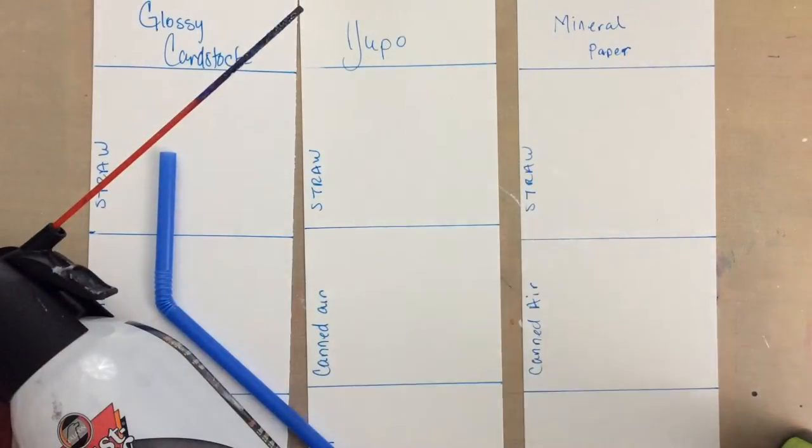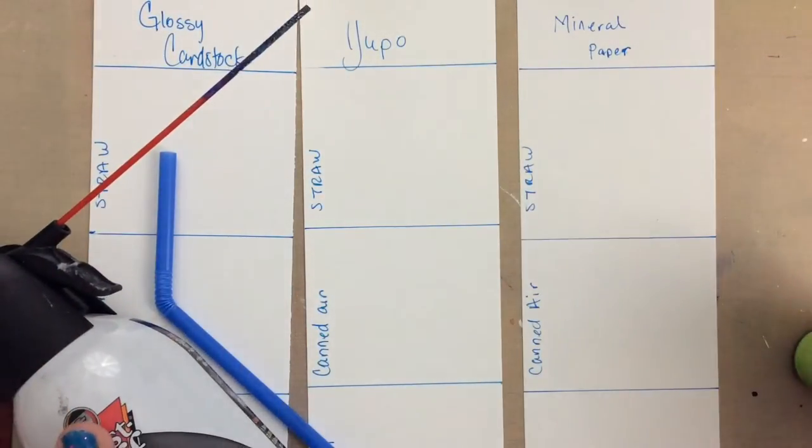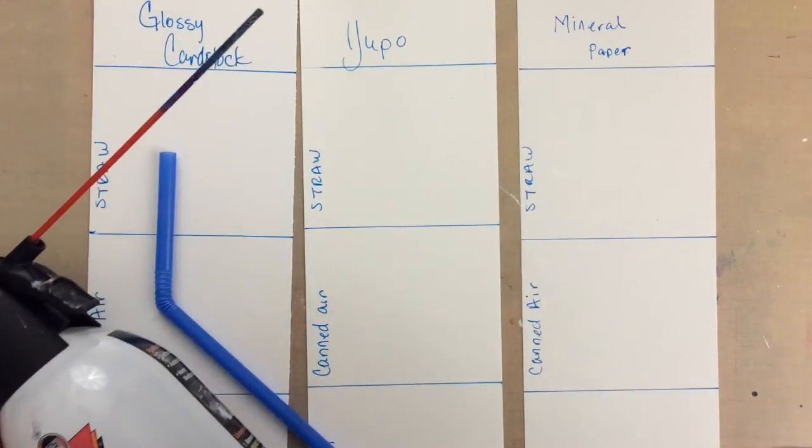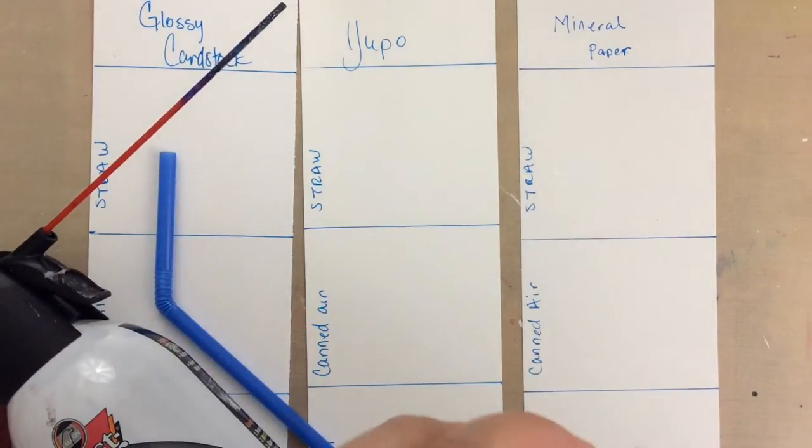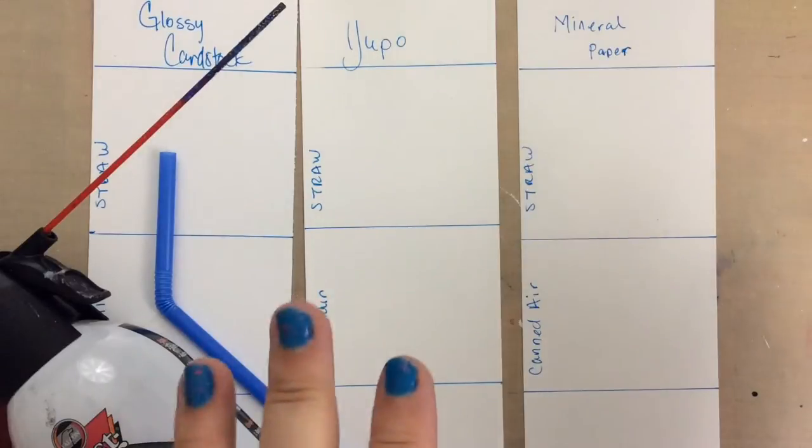Hey guys, welcome back to Alcohol Ink Month at Color Me Creative Art. I'm Jessica Sanders, thanks for joining me. So today we are going to explore actually blowing the ink. You can get some really fun effects by blowing the ink and there are different ways to do it.